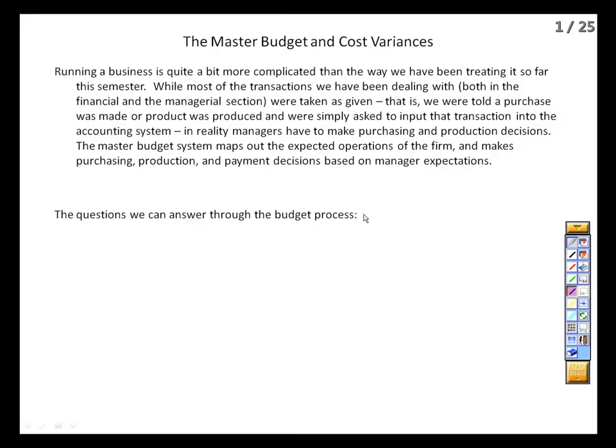Today we talk about the master budget — the uber budget on which everything is planned. Virtually everything we've done so far has been retrospective in nature: how did we do from time one to time two? But from a business standpoint we need to look ahead to plan our purchasing and production. The master budget allows us to map out the way we think things are going to go, and when we're done we can produce financial statements showing where we'll be at the end of the period — and make changes if needed.